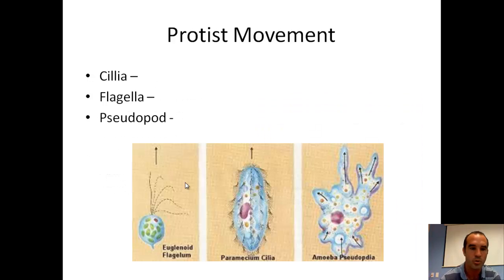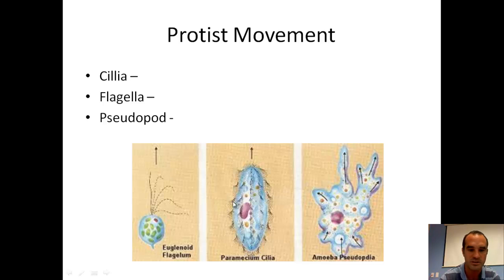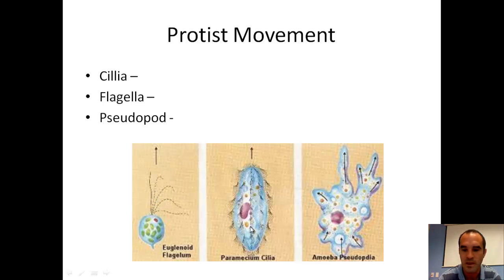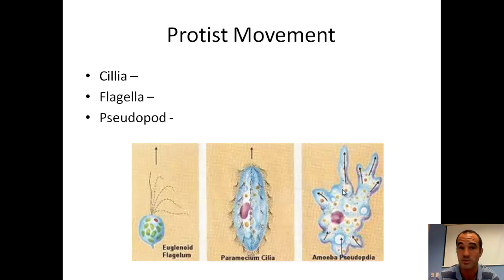Protists have three different ways of moving. They can have cilia — tiny little hairs coming off the side of the protist. They can have flagella, just like bacteria, to help them move through their environment. And if they're like an amoeba, they can extend little projections of their body called a pseudopod — a Greek word meaning 'false foot' — and actually extend their body out and creep along to move through their environment.